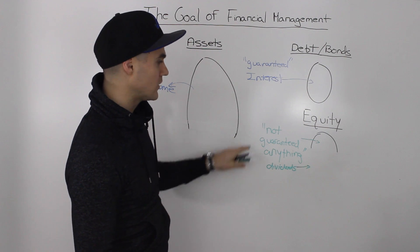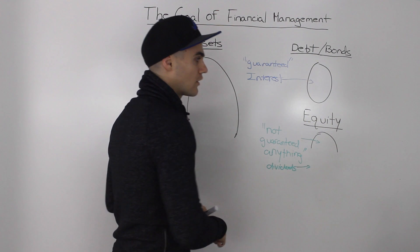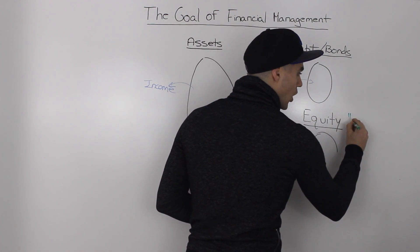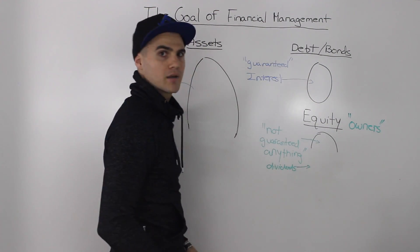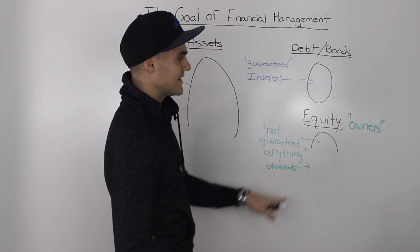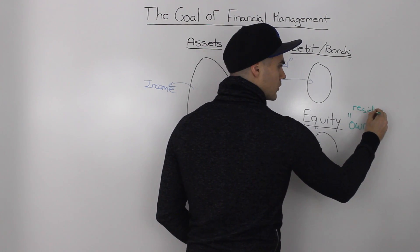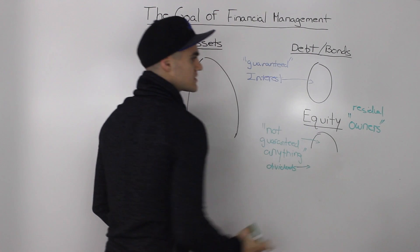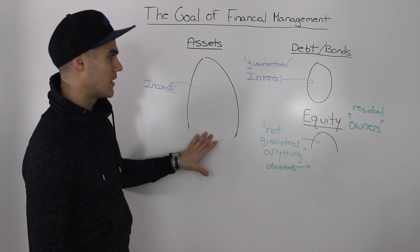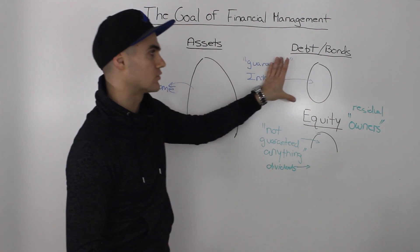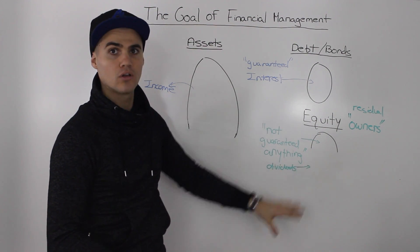In contrast, the equity holders are taking on more risk — if the assets grow, the equity holders' share of the pie grows, but if the assets get smaller, the equity pie gets smaller as well, and unlike bondholders, there's no bankruptcy filed. So because the equity holders are not guaranteed anything and they're taking on the most risk, they're also considered the owners of the company — sometimes called the residual owners, meaning they get the excess of the company after the bondholders are paid.